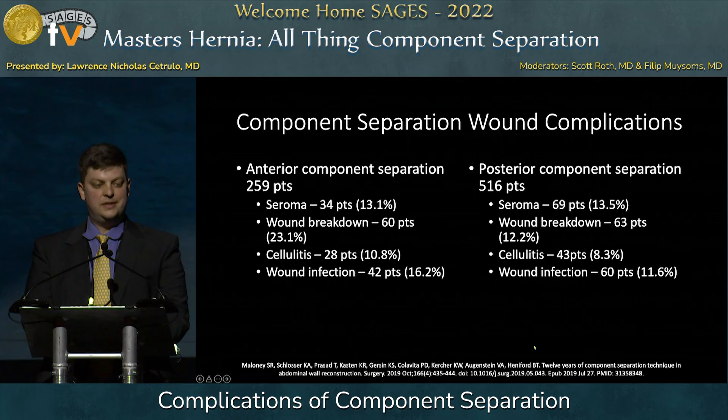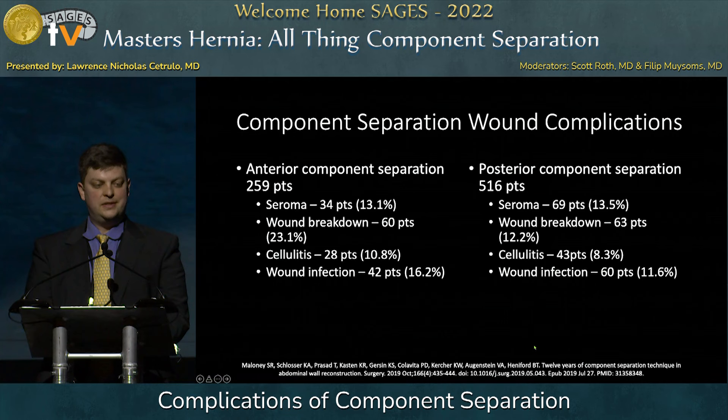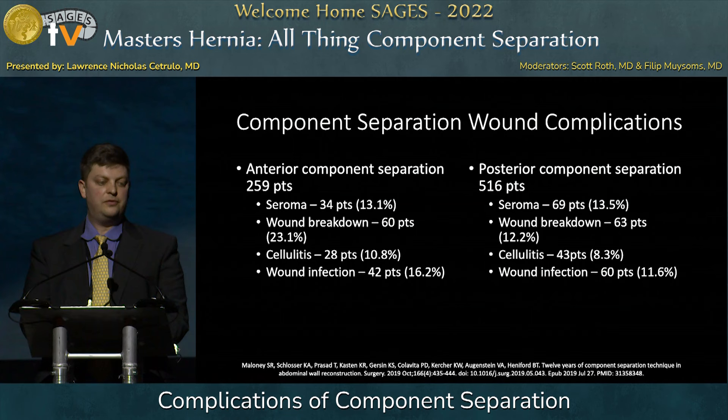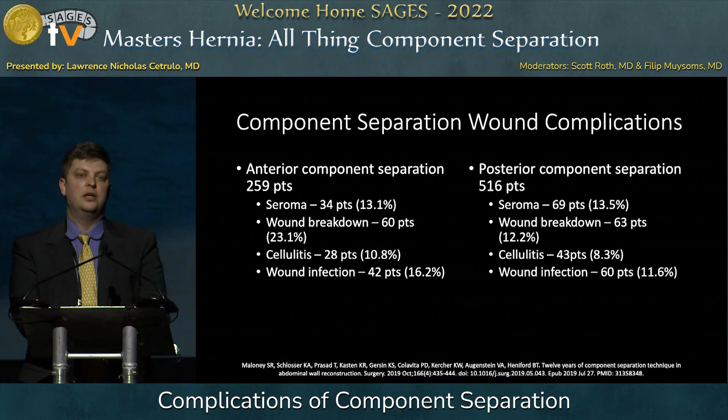Separating out wound complications into anterior versus posterior component separation: twice as many patients were in the posterior component separation group, and the percentage of issues was similar between the two groups. However, the statistically significant findings were specifically in the cellulitis and wound infection categories — these occurred significantly more in the anterior component separation group. These numbers were not statistically significant in the posterior component separation group.